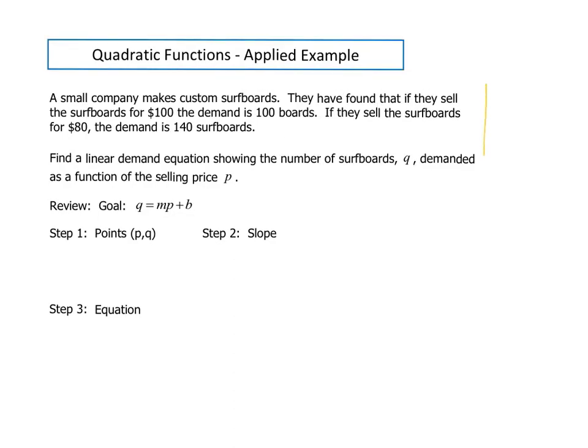We see that idea where as we increase the price, the number of surfboards that are demanded goes down. The first thing we're going to do, because we're trying to find the linear demand function, our goal is to build a function like this: Q equals MP plus B.